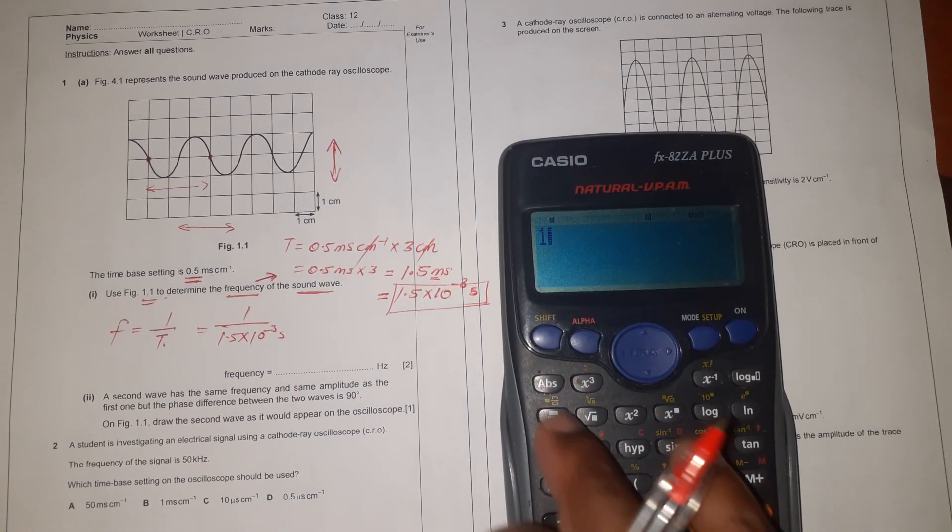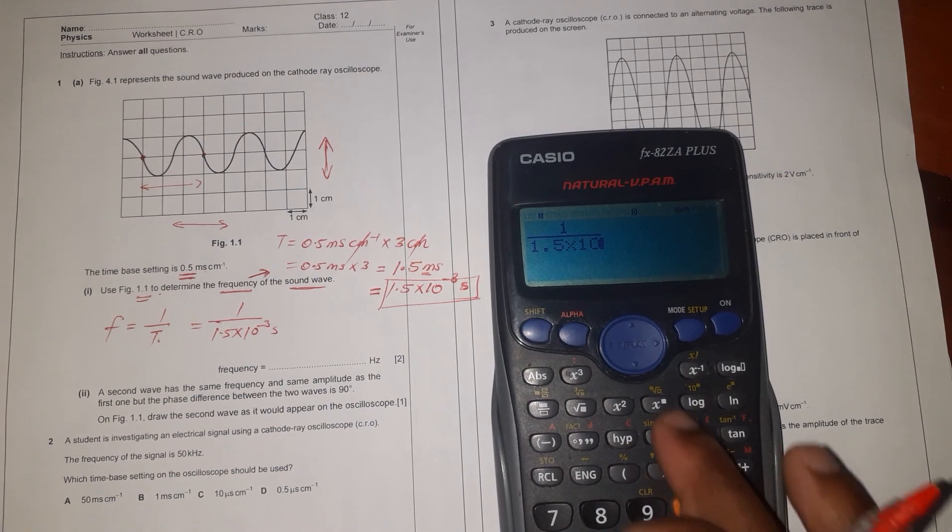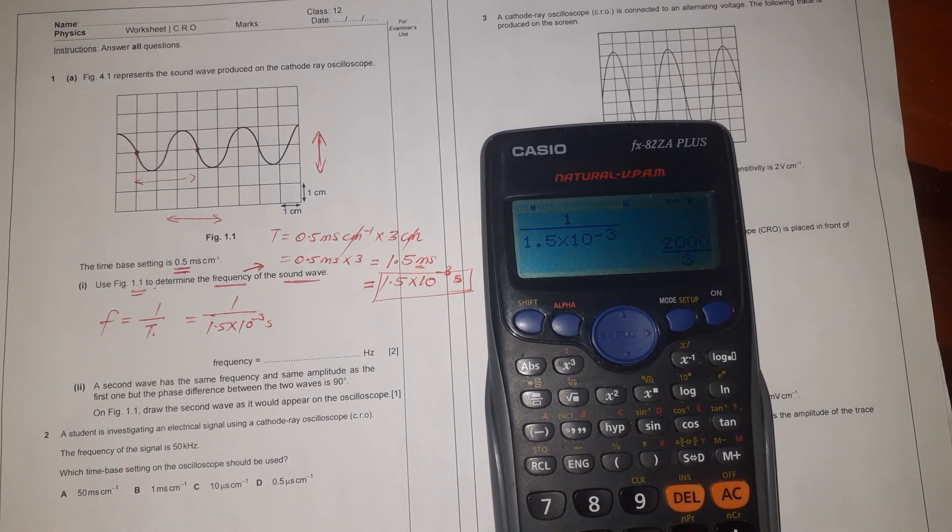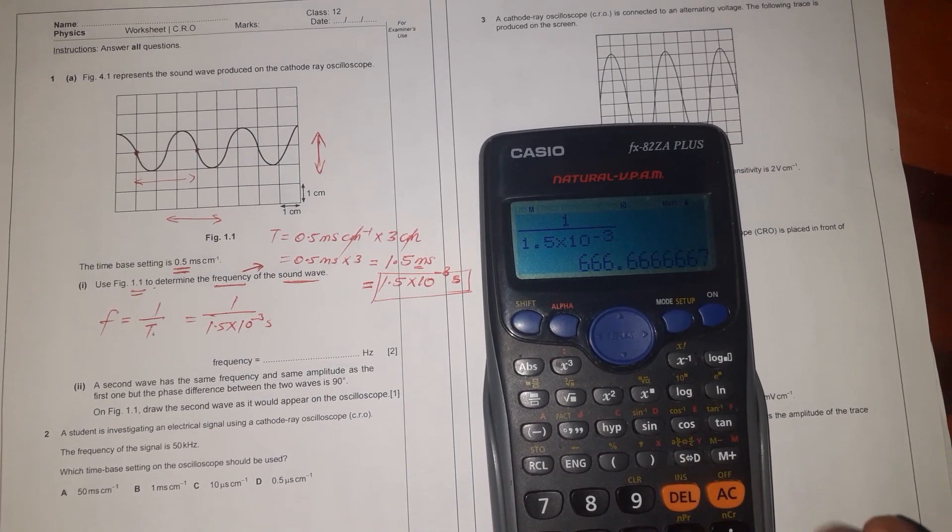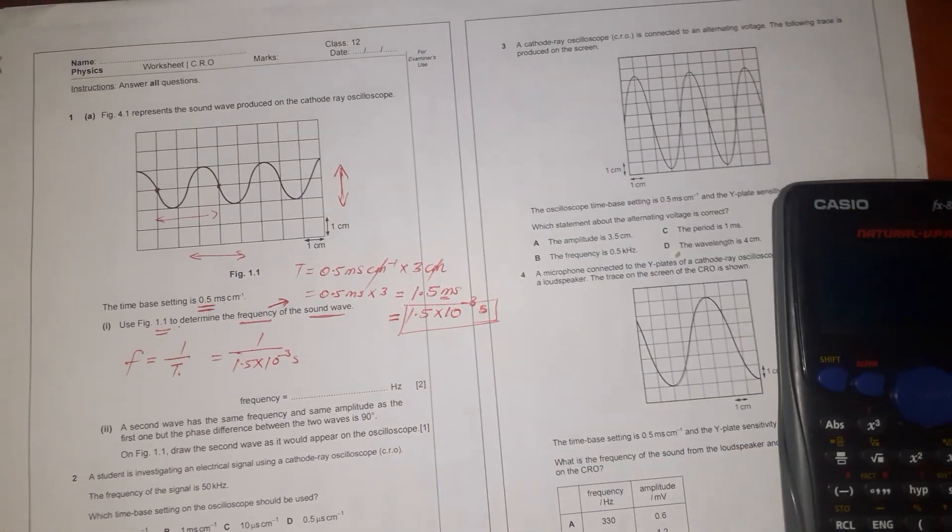We have 1 over 1.5 times 10 to the power minus 3 equals to, we get this number which is 666.66.